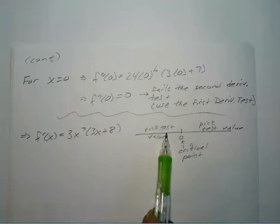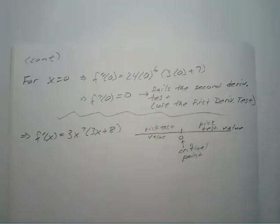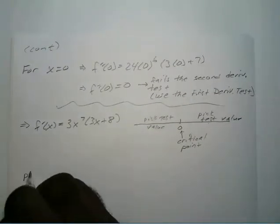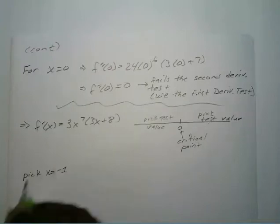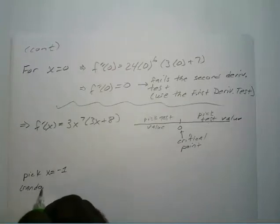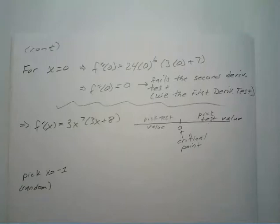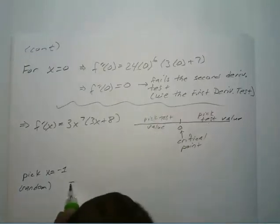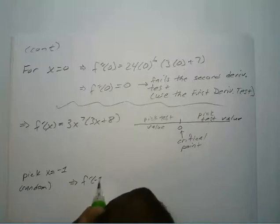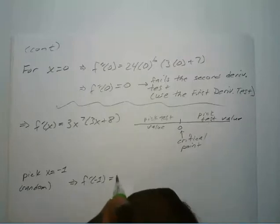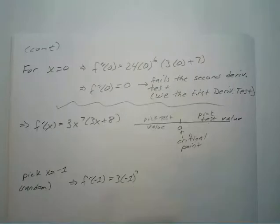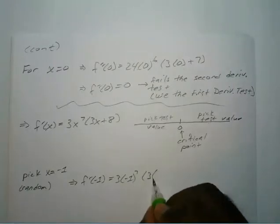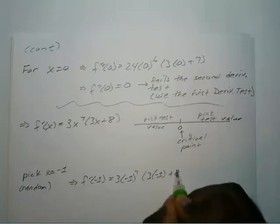I'm going to pick x equals negative 1 because it's the easiest number on the left — completely random. The first derivative at negative 1 equals 3 times negative 1 to the 7th power times 3 times negative 1 plus 8. Negative 1 to the 7th power is negative, so you have negative times a positive, making this negative. Then 3 times negative 1 is negative 3 plus 8, which is positive. So negative times positive is negative.